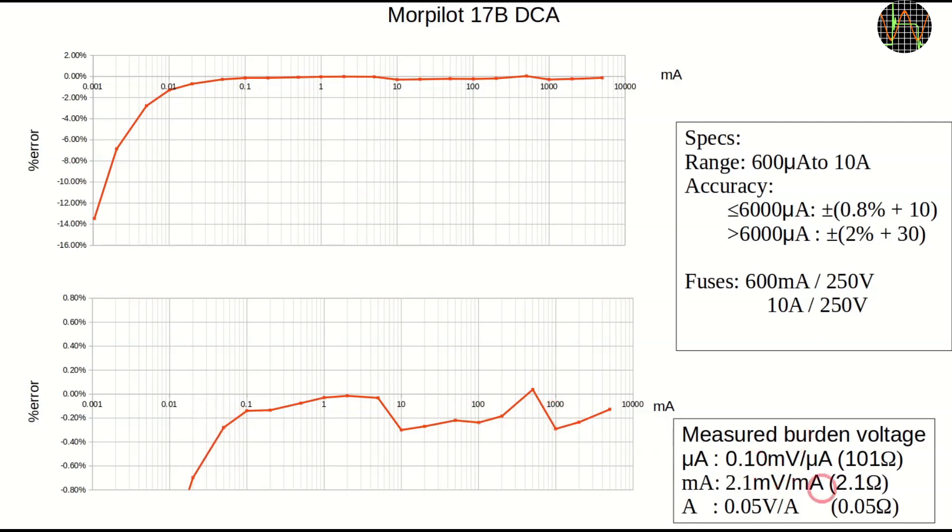I measured the resistance of the different ranges and the values and corresponding burden voltage are in this table. They are pretty standard for most multimeters, nothing that stands out either positively or negatively.